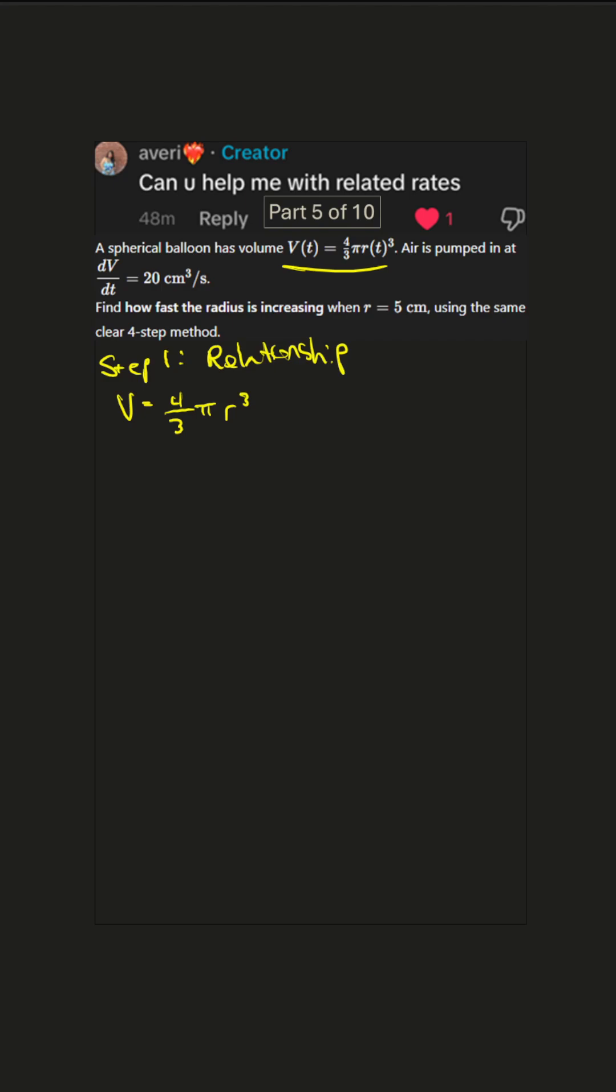Step 2: differentiate with respect to time. So we take d dt of both sides of the equation. So d dt of V equals d dt of 4 over 3 pi r cubed.